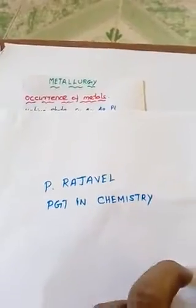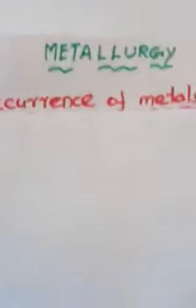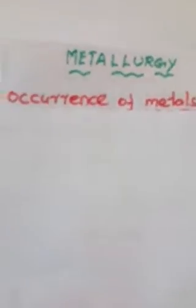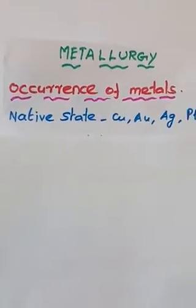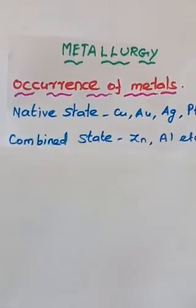Metals have well-known properties — they are malleable and ductile. Many metals you know well: copper, zinc, gold, etc. These metals occur in two forms: one is the native state and the other is the combined state.